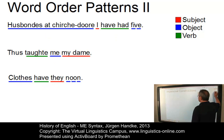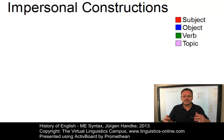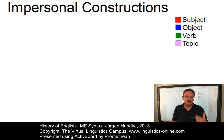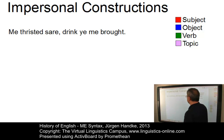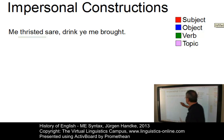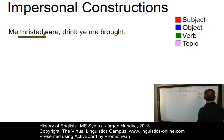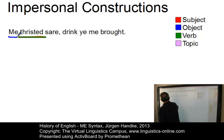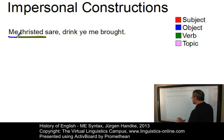Middle English had a number of so-called impersonal verbs — that is, verbs without an overt subject but with a topic expressed in the accusative or dative case. The number of such constructions increased in Middle English. Here is one example: 'Me thirste yore drink ye me brought.' Looking at the first clause, 'me thirste yore': 'thirste' is the verb, 'me' is an object, and 'yore' is an adverbial which we can ignore in this particular case.